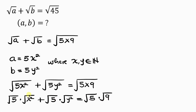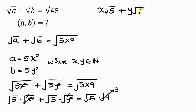Notice that the square root cancels with the square, leaving behind x; and the other square root cancels with the square, leaving behind y. The square root of 9 is 3. So this becomes x√5 plus y√5 equals 3√5.